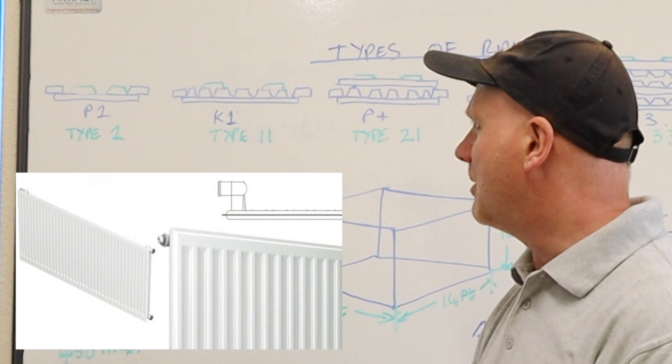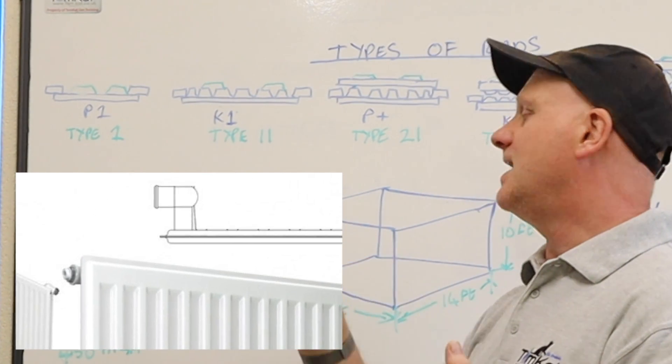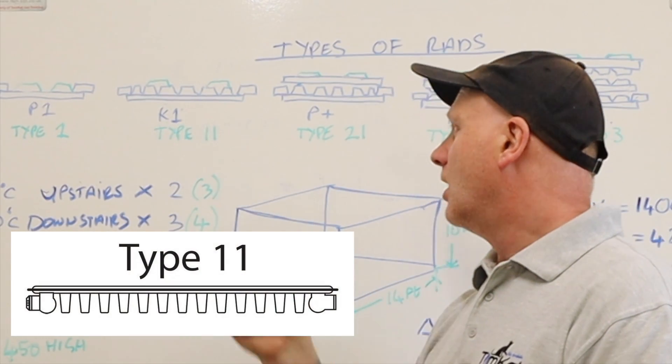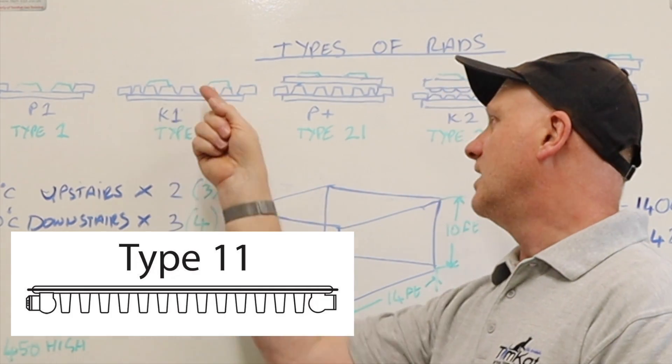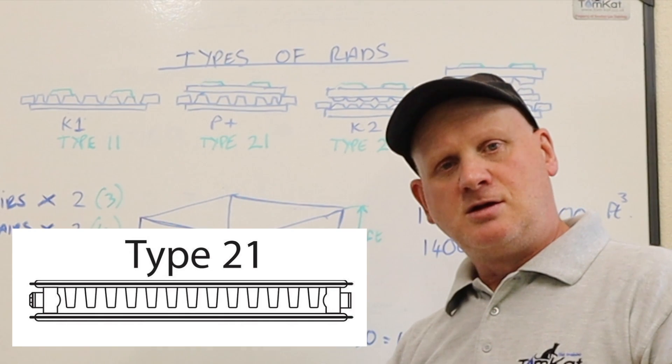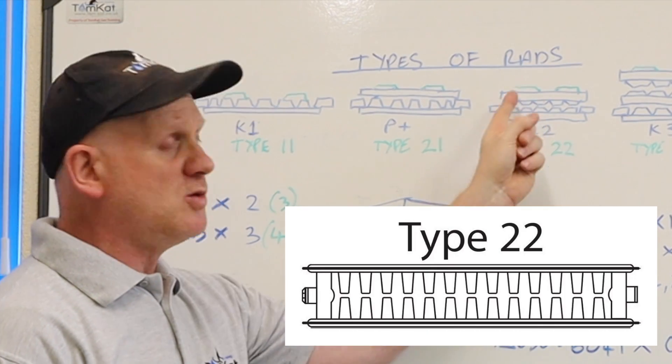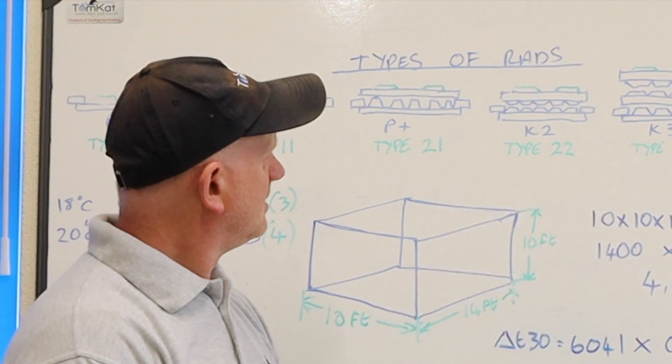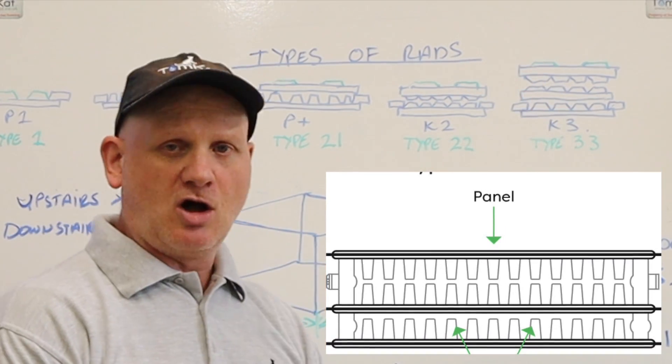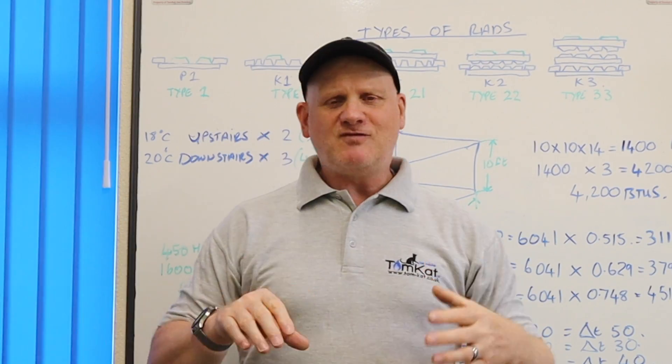So let's have a look at the types. Some call it a P1 and some call it a type 1, that's just a paneled radiator without any fins on the back. Now a type K1 or a type 11 is a single paneled radiator with one set of fins on the back. A P plus or a type 21 is two panels with one set of fins in the back. A type 22 or a K2 is two panels with two sets of fins in the middle. And we've got a type 33 or a K3 where we've got three panels and three lots of fins.